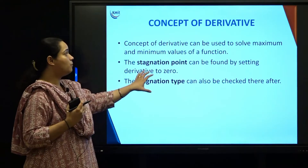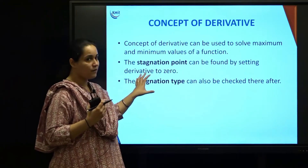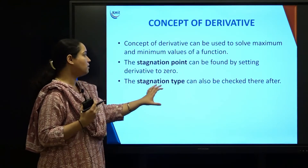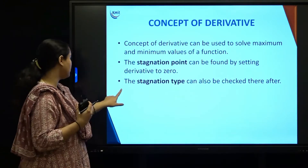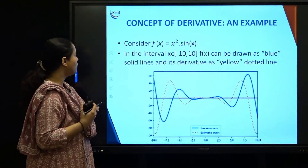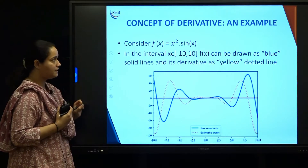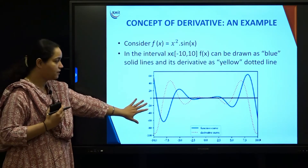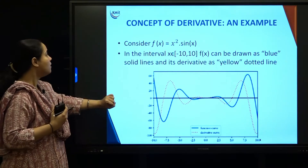A stagnation point can be found by setting the derivative to zero, and the type of stagnation point can be checked thereafter. For a better overview, let me consider an example — focus on the diagram.